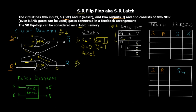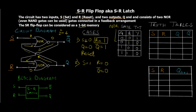For Case 2: S = 1 and R = 0. Since S is high, one input of the upper NOR gate is 1, so the output Q-bar is directly 0 from the truth table. This Q-bar value of 0 is fed back as input to the lower NOR gate. With R = 0 and feedback = 0, both inputs are 0, giving Q = 1. Since S = 1, this state is known as the Set state.